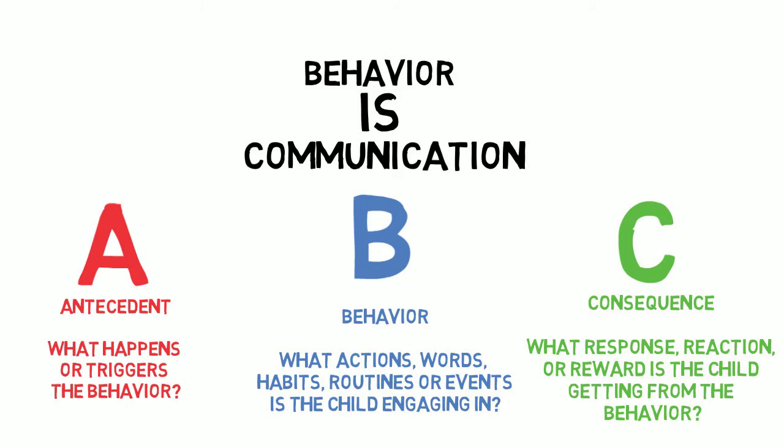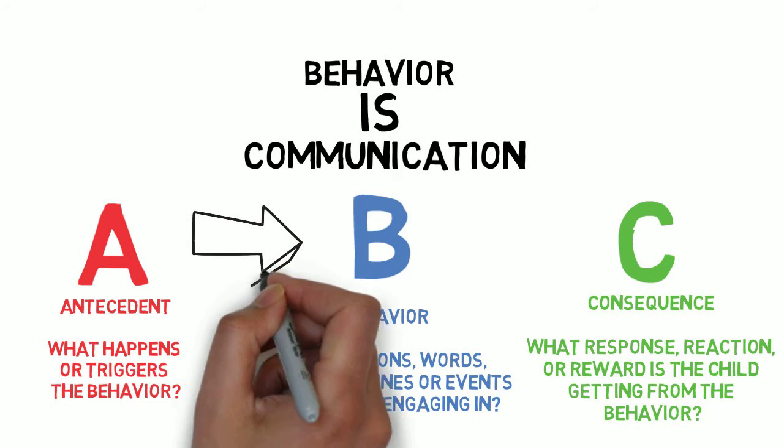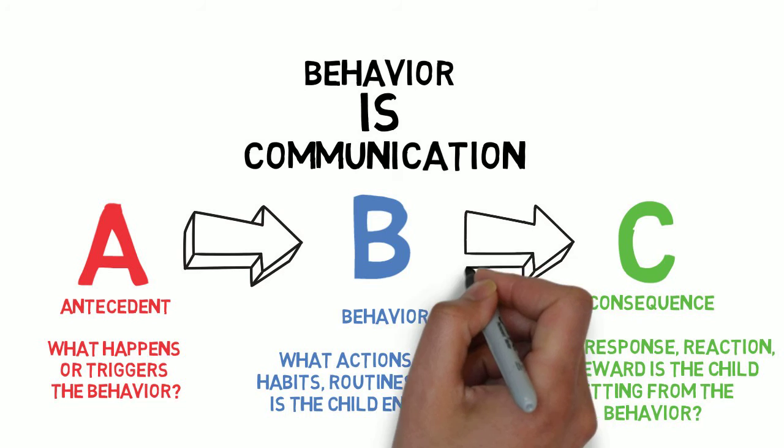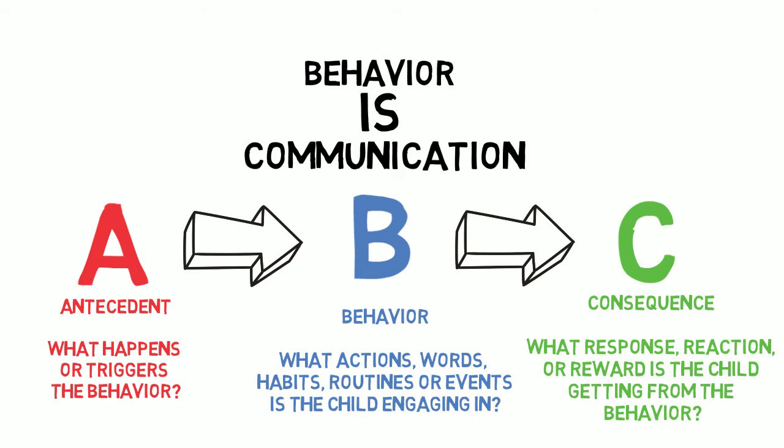Let's say the antecedent is: a child is in the crib looking around and no one's around. That's the antecedent. Next, the behavior is crying. Now, the consequence or reaction is that a parent enters the room and the child stops crying, or the parent picks them up and feeds them or rocks them — and so the child gets their needs met and the cycle repeats. The child learns very innately that if they look around the room and see that they're alone, they can cry and someone will come get them. That is a way of communicating, and even the youngest of babies do this. So when we're looking at our children, we want to see it as: hey, they're trying to tell me something.